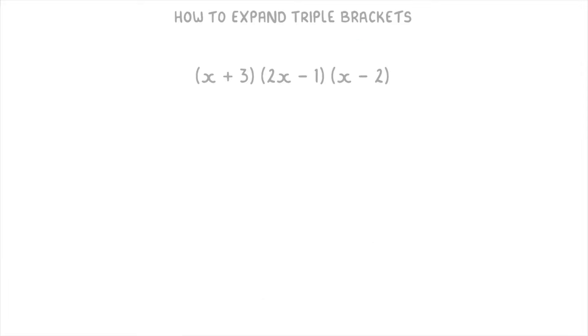Let's try one more now. One thing to know with these is that it doesn't matter which two brackets you multiply together first. So we could ignore the x plus 3 and multiply together the 2x minus 1 and the x minus 2. So we draw all of our arrows and then work them all out. We'd get 2x squared minus 4x minus x plus 2, and if we combine the like terms we'll get 2x squared minus 5x plus 2.